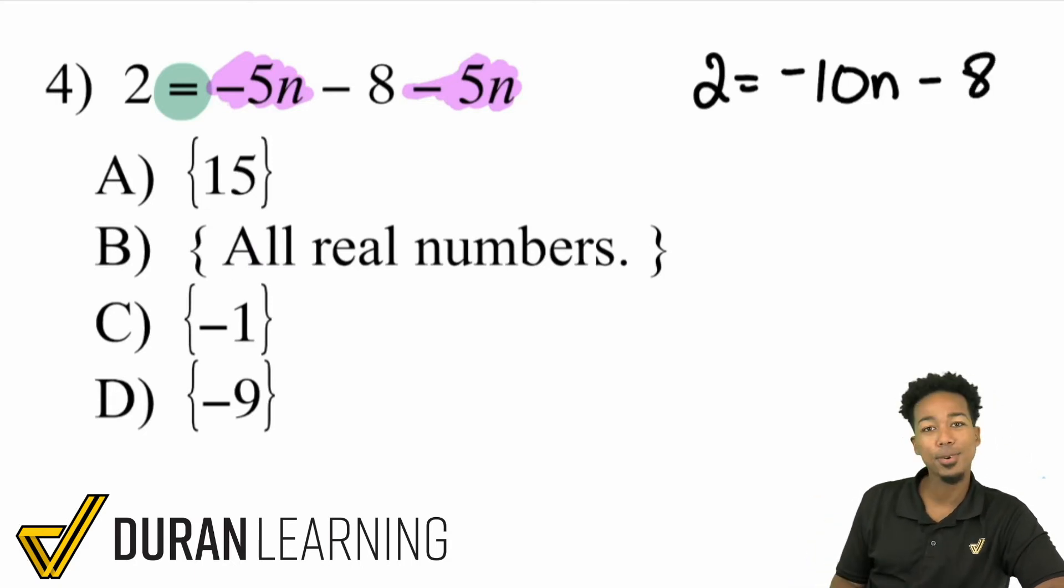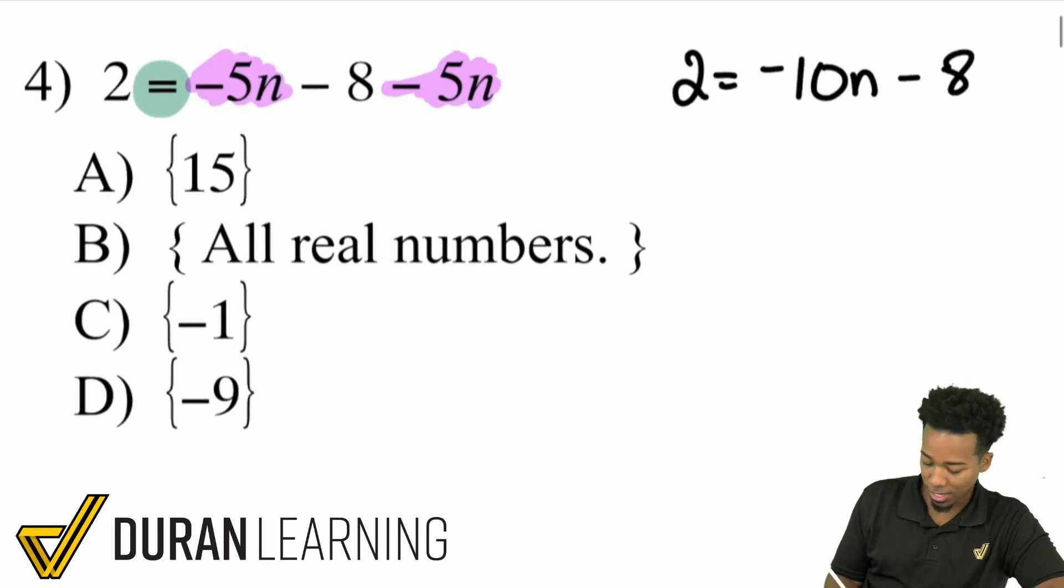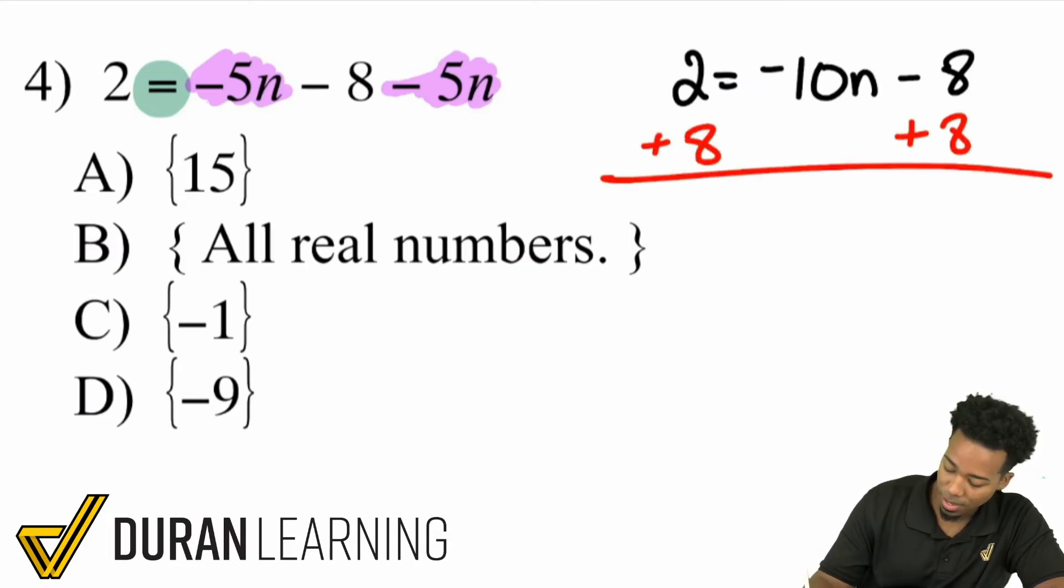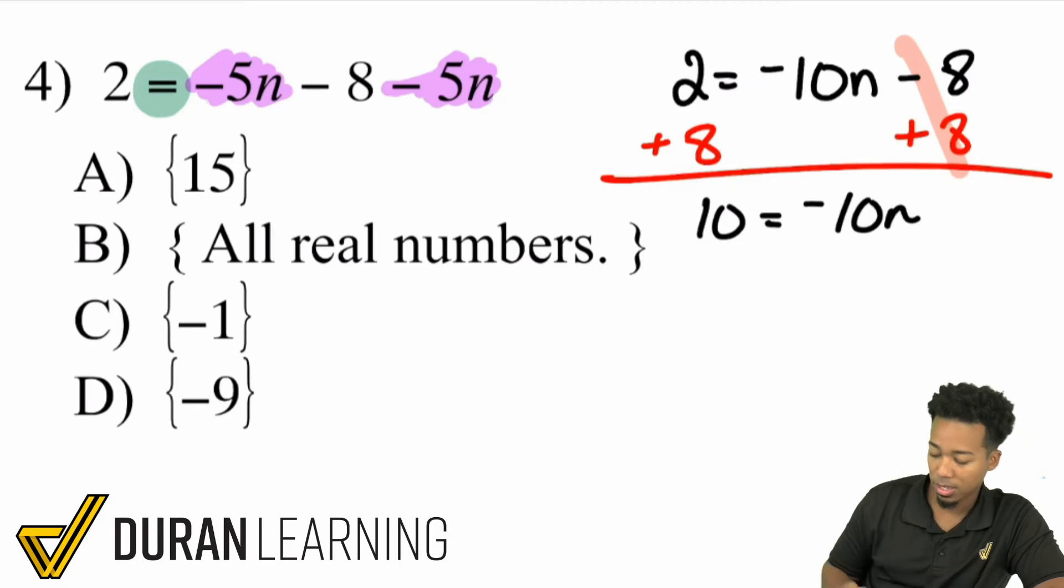So we can rewrite this as 2 equals negative 10n minus 8. And then from here, let's get to work. So the first thing that I'll do is try to get rid of that minus 8. Because again, it's the furthest thing away from the variable, we have the immediate attachment, then we have the minus 8. So to get rid of the minus 8, we add 8. So boom, take care of that on both sides. That's going to go ahead and cancel out, giving me 2 plus 8, which is 10 equals negative 10n.